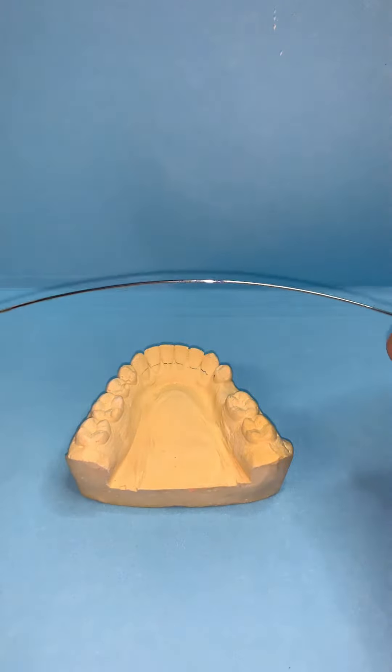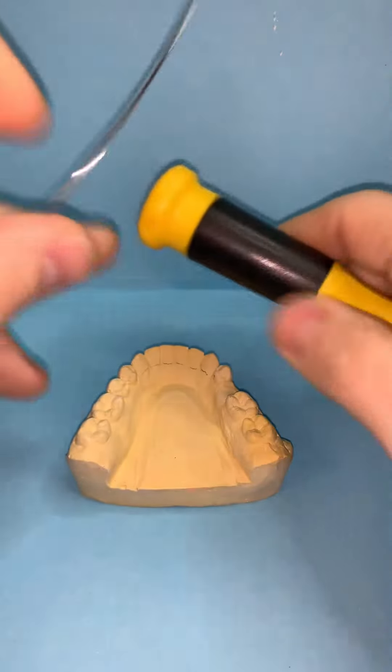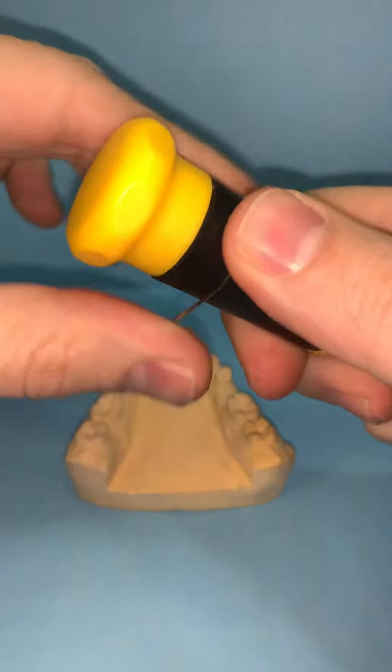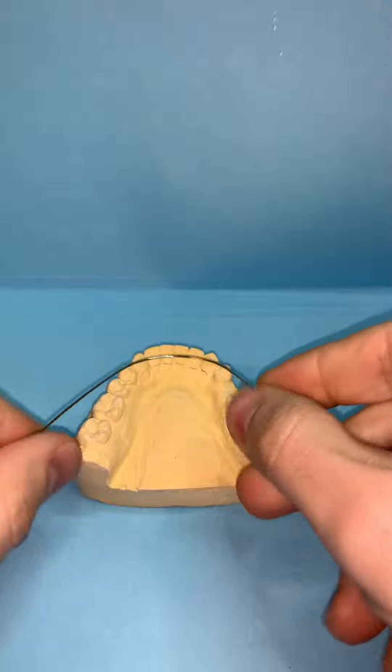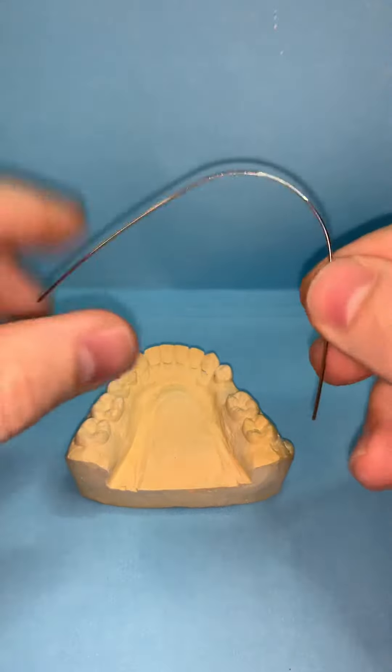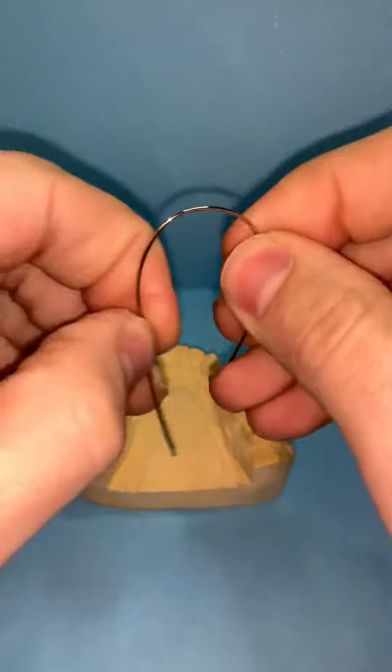So how do we bend it? Start with a wire, get it into an arch smaller than the patient's mouth. As you see, it's still a little larger, so we want to make it a little smaller.